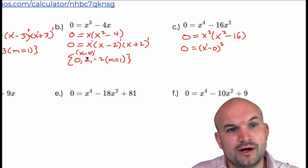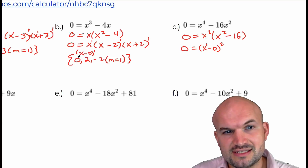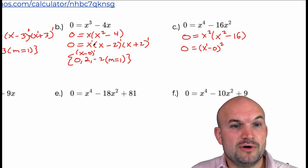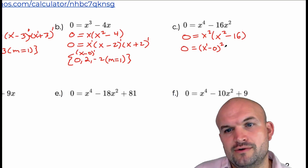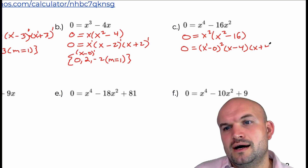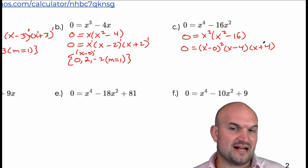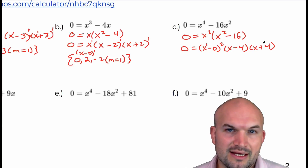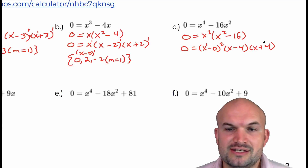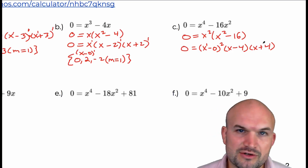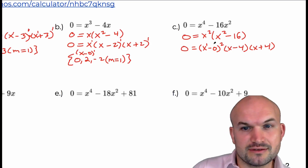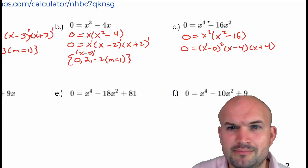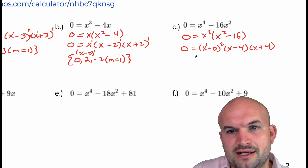So the x-intercept at zero is going to be bouncing, while the others have an odd multiplicity of one and will cross. Then I factor x² minus 16 as (x minus 4)(x plus 4). I'm not re-explaining the difference of two squares here since that's a technique we should be comfortable with, but I do have extra resources if you need more help.